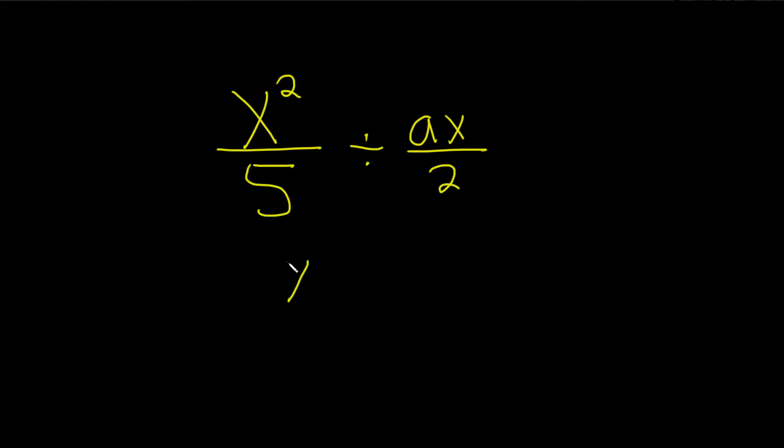Let's write down the first fraction again, x squared over 5. Remember, division is the same thing as multiplication by the reciprocal. This turns into a times, and then you flip this fraction. That's the reciprocal, so 2 over ax.